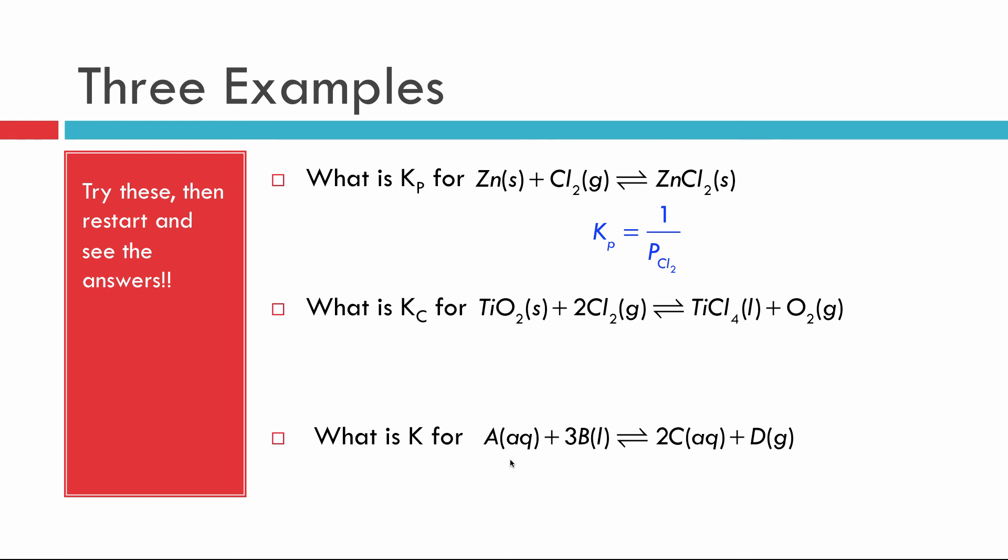On the next one, we have the oxygen divided by the concentration of the chlorine squared. We put, this is K sub C, so that's why we're using concentrations. And then finally, for this last made up one, it's just, we're asking for just a simple K.